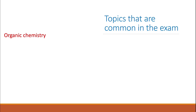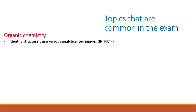Moving on to organic chemistry, which makes up the majority of your Paper 2 exam — there are typical questions that will always be in your exam. The first topic is identifying structures using various analytical techniques: IR, carbon-13 NMR, and proton NMR. All three techniques will always be in the exam. They can either be one long question or related to different compounds, and they ask you to identify the structure based on the analytical data. Go ahead and practice these questions until you master them.